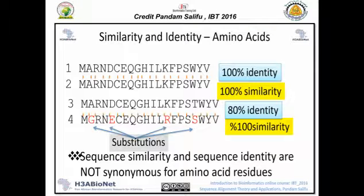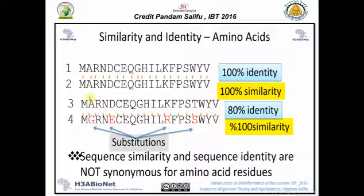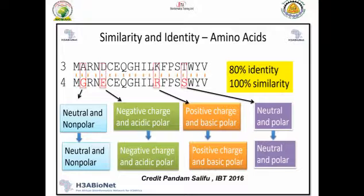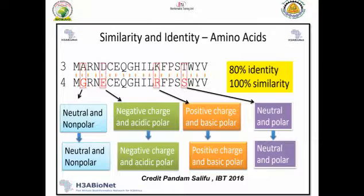In protein, it's different — identity doesn't mean similarity. For example, looking at sequences three and four, you can see that the identity is 80% but similarity is about 100%. That's because there are amino acids which may not be identical, like A and G or T and E — they're not identical but they are similar in their characteristics. Looking at the amino acid chart, amino acid A and amino acid G are both neutral and nonpolar, so they are similar even if not identical.